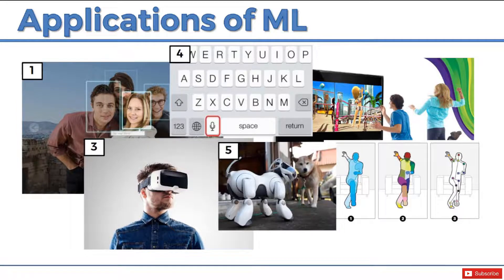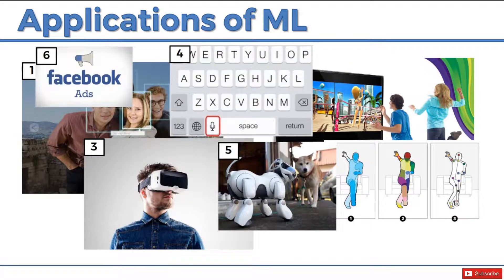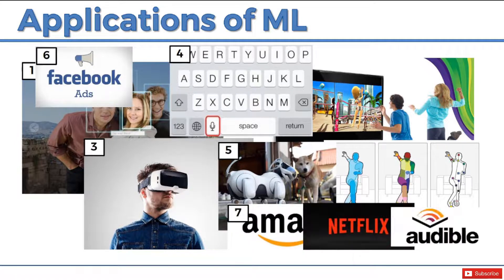Then we've got robot dogs, and they learn how to walk. They don't just put an algorithm in them — they actually use a machine learning method called Reinforcement Learning so that the dogs learn how to walk on their own. Very interesting, and another thing we'll discuss inside this course. Facebook ads know you better than you know yourself — machine learning. Amazon, Netflix, and Audible all use machine learning for their recommender systems.